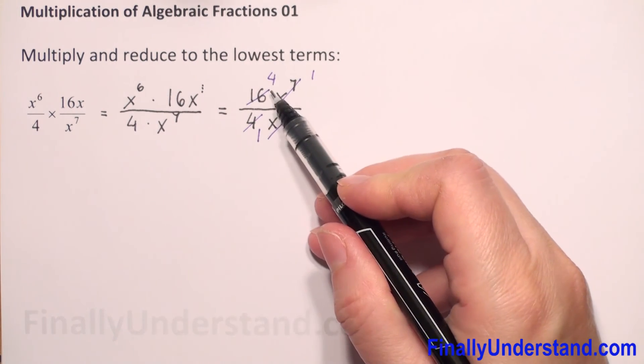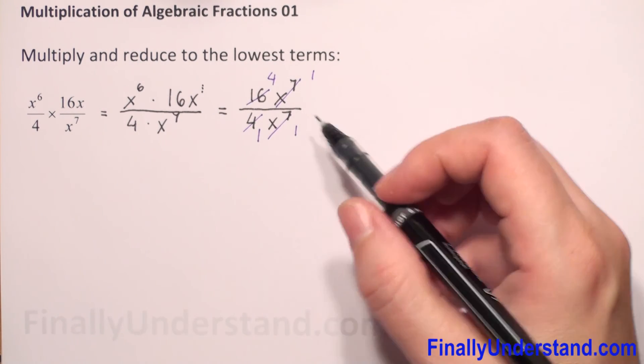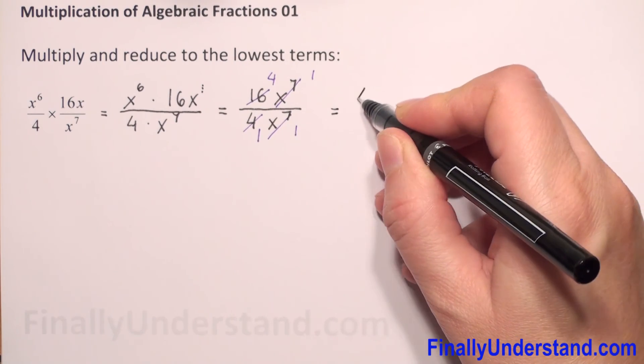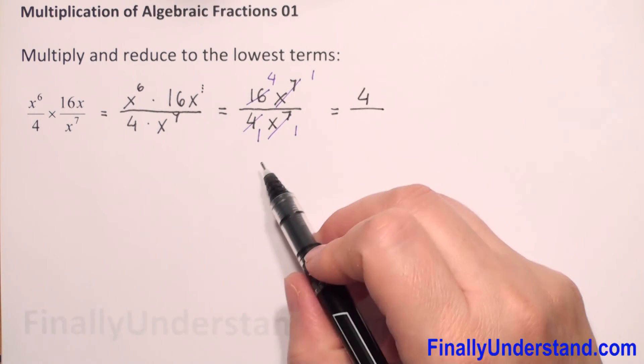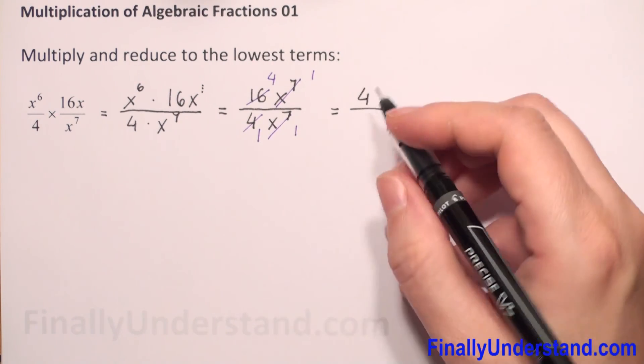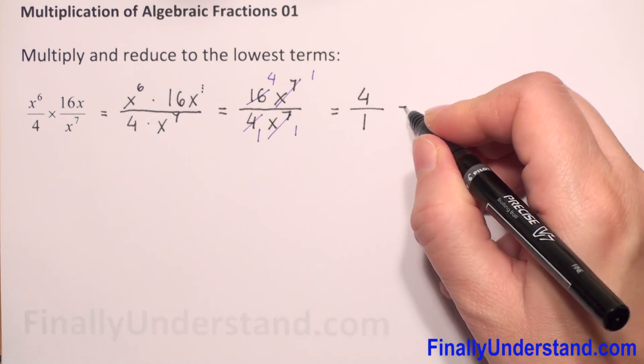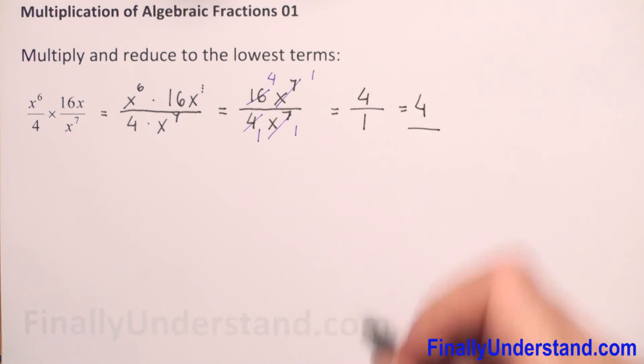We have 4 times 1, which equals 4 in the numerator. In the denominator we have 1 times 1. So 4 divided by 1 is 4. This is the solution.